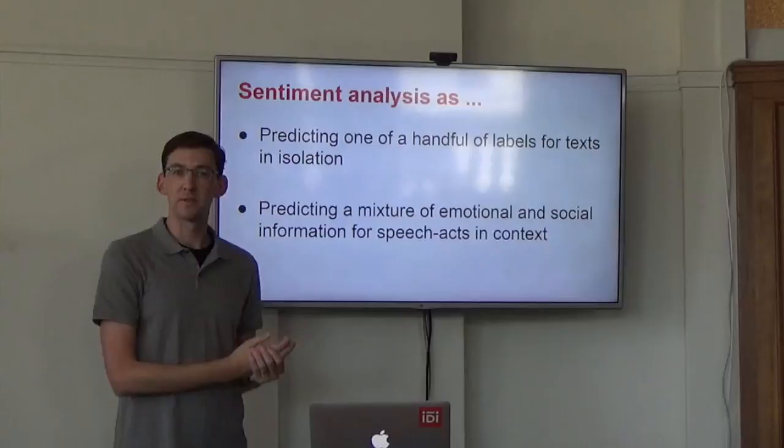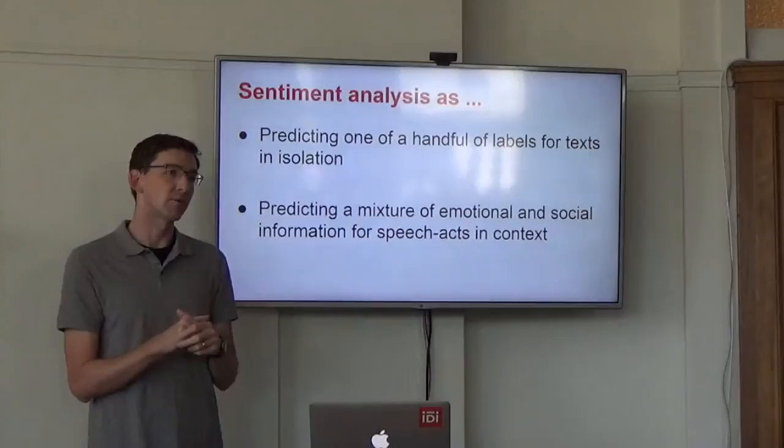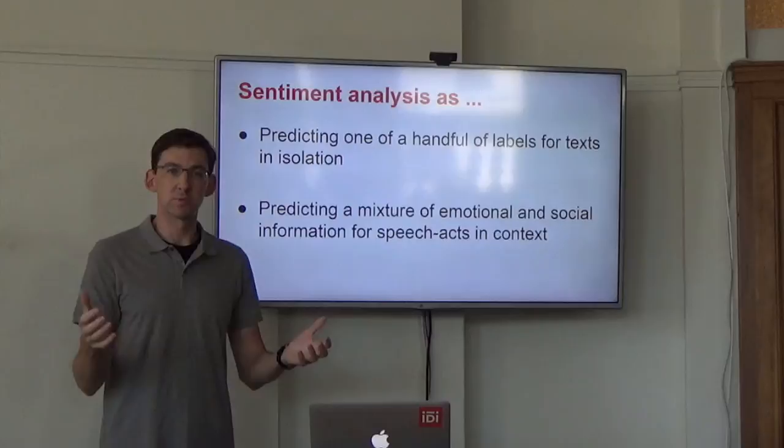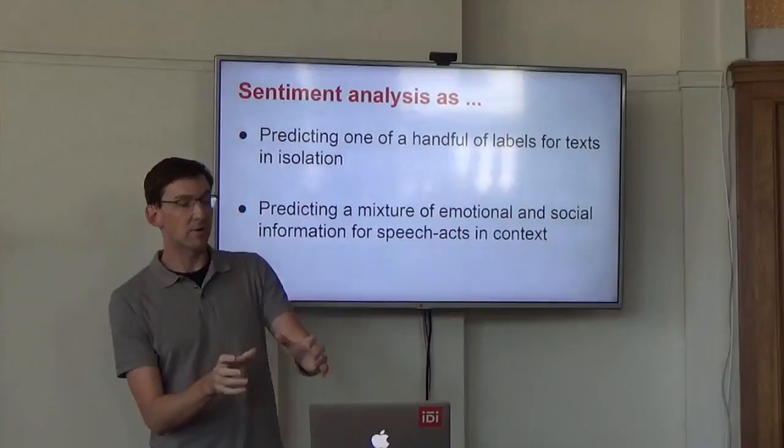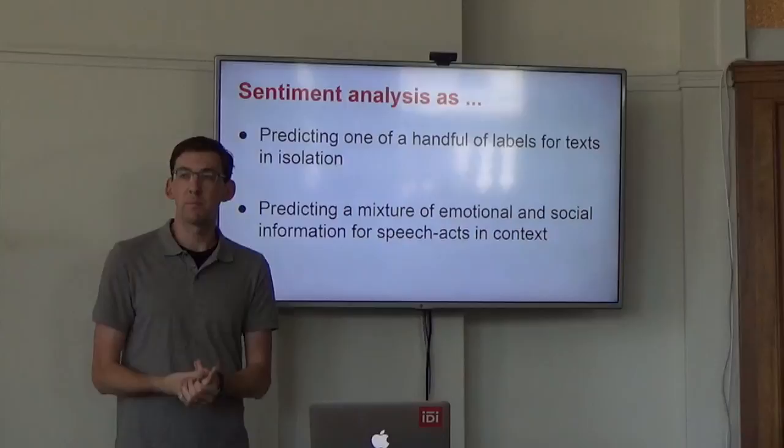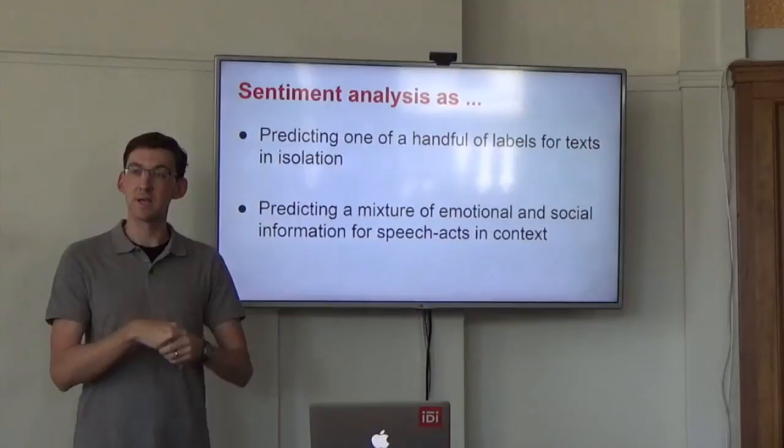I'm going to explore that second bullet, though. Here, we're predicting a mixture of emotional and social information for speech acts in context. The two points of contrast are first, we're probably going to have a high-dimensional label set, not just three labels but maybe a hundred. We also might not presuppose that each text has a unique label. It could be a mixture of different kinds of emotional information. Instead of doing this for texts in isolation, the idea conceptually is that we'll make these predictions about speech acts in context. We care about who's talking, what they're talking about, who they're talking to, and so forth.